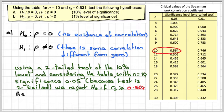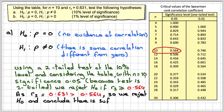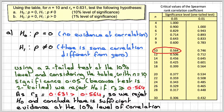So all we need to do now is write down the conclusion. As rs equals 0.631, which is bigger than 0.564, we will reject H0 and conclude that there is sufficient evidence at the 10% level of correlation different from zero.